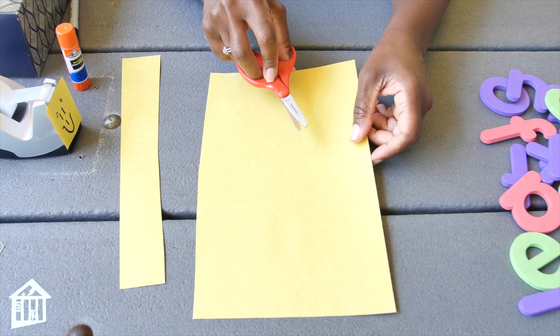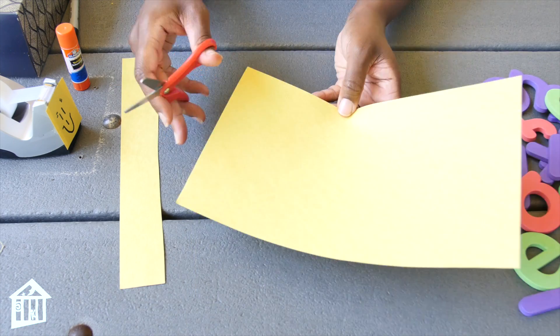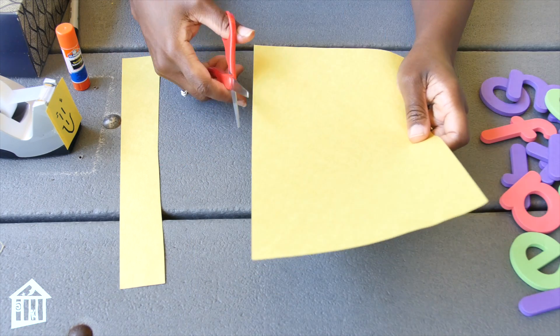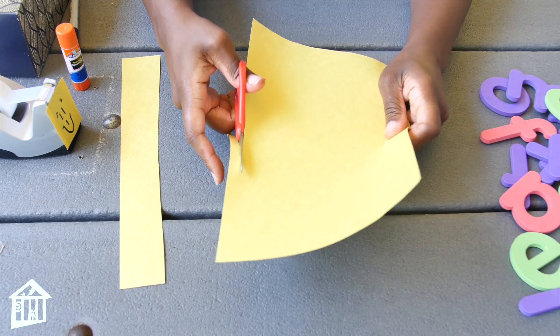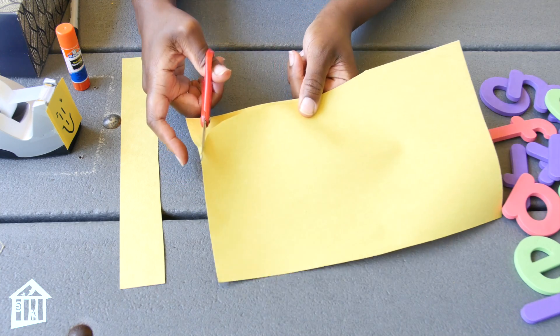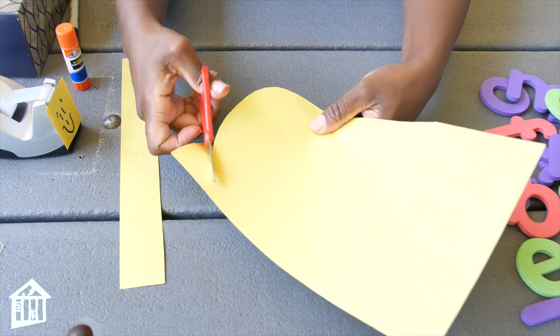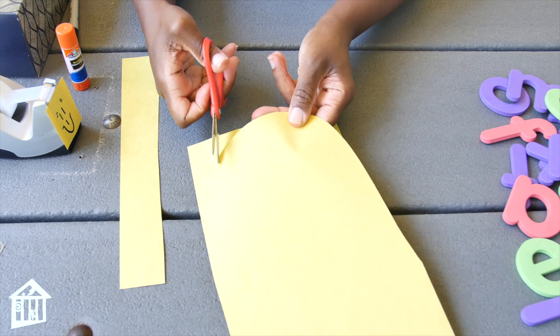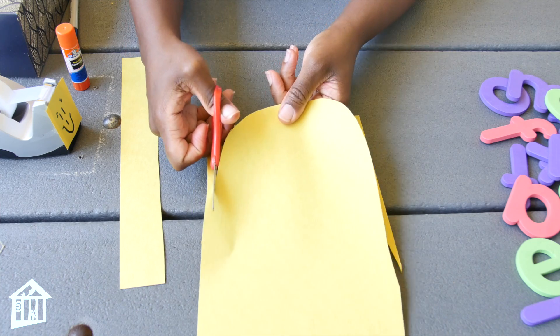Now I'm going to make a ghost. You can make any type of animal, you can make whatever your toddler or your kid is interested in. So I'm just going to cut this into the shape of a ghost. And you know what, I did mine similar to the one on the old Pac-Man game. So that's what my inspiration was.